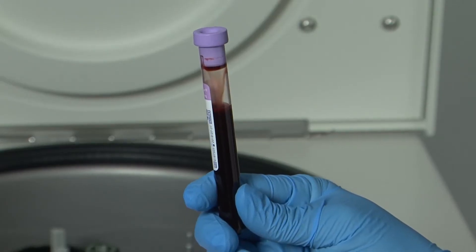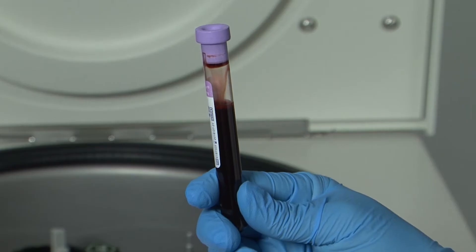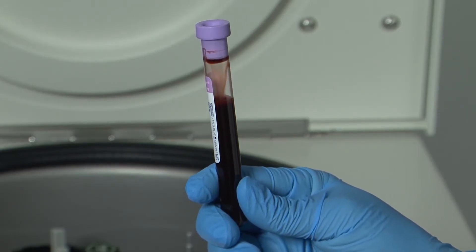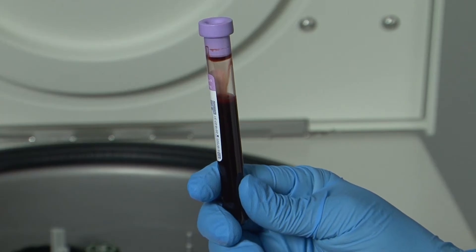A lavender top tube of blood contains red blood cells, white blood cells, platelets, and plasma. These tubes need to be centrifuged to accomplish separation.